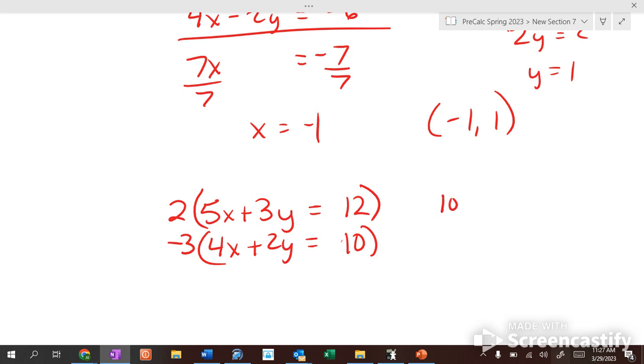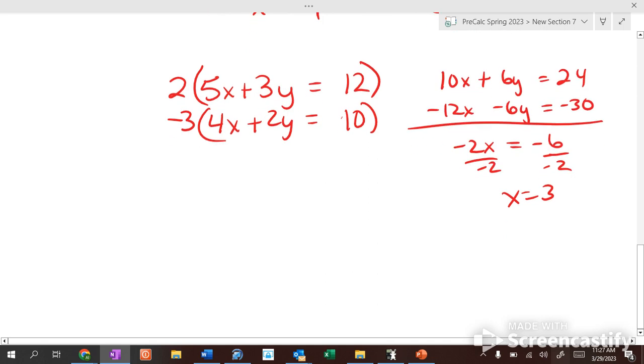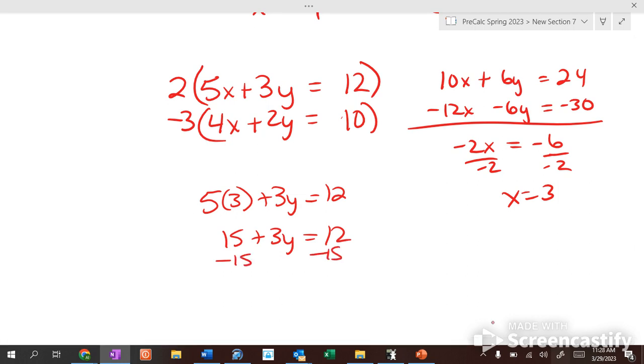So then I have 10x plus 6y equals 24, and negative 12x minus 6y equals negative 30. If we add, negative 2x equals negative 6, divided by negative 2, x equals 3. Once x equals 3, then you use substitution again, and you can go back to an original equation. 5 times 3 plus 3y equals 12, so 15 plus 3y equals 12. We subtract 15, 3y equals negative 3, y equals negative 1.